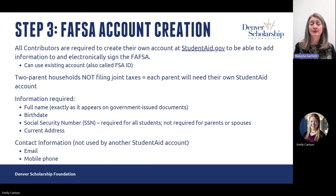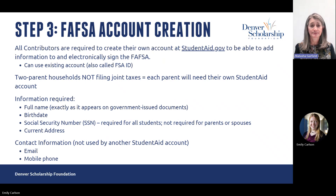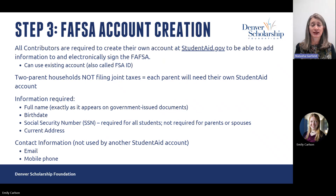In the past, these accounts were sometimes referred to as FSA IDs. There are steps a person can take to recover their username and password if they've forgotten how to access that account. In a situation where there are two parents in the household who don't file taxes jointly, each parent will need their own student aid account. The reason is that the FAFSA is now set up to pull information directly from an individual's tax return through the IRS — so if parents did not file jointly, each will need their own account so FAFSA can pull their IRS information.